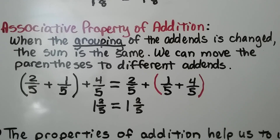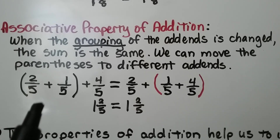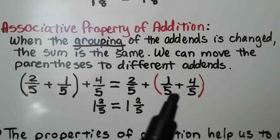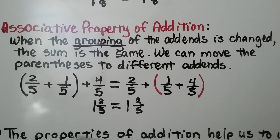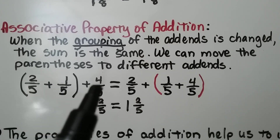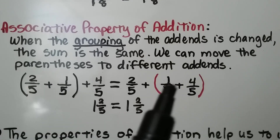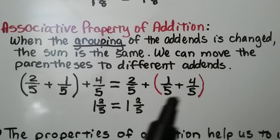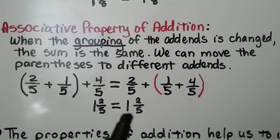For the associative property of addition, when the grouping of the addends is changed, the sum is the same — we can move the parentheses to different addends. The parentheses were around the 2 fifths and 1 fifth. We change them to be around the 1 fifth and 4 fifths. That makes 5 fifths, which equals 1 whole, giving us 1 and 2 fifths.